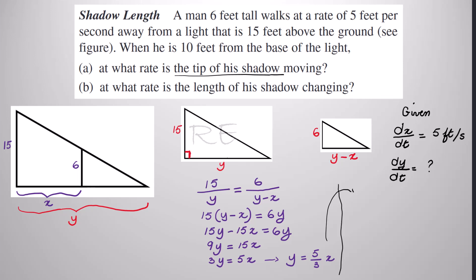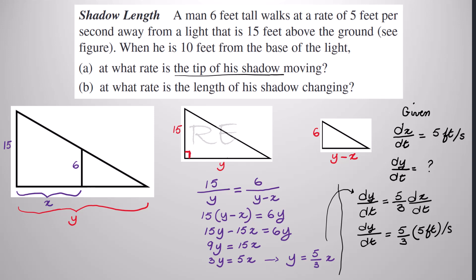Since y is isolated and we're looking for dy/dt, we can take the derivative of both sides. So dy/dt is equal to 5/3 times dx/dt. dx/dt is given as 5 feet per second, therefore dy/dt is equal to 5/3 times 5 feet per second, which is 25/3 feet per second. We just answered question A.